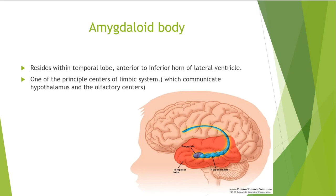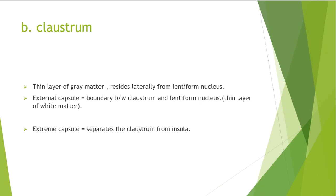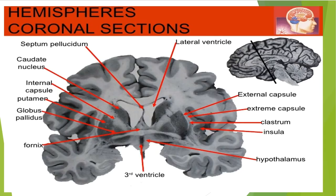The claustrum is a thin layer of gray matter situated laterally from the lentiform nucleus. The boundary between them appears as a thin layer of white matter called the external capsule. The lentiform nucleus comprises the putamen and globus pallidus. Another white matter layer, the extreme capsule, separates the claustrum from the insula.